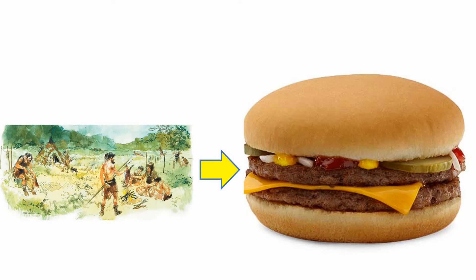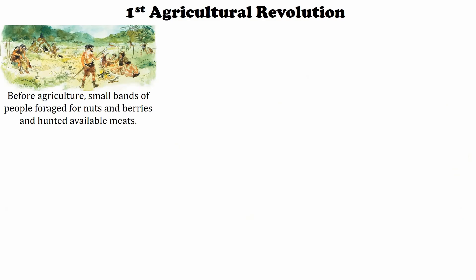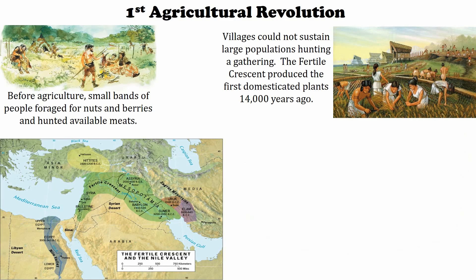It started a long time ago when nomadic bands of people were hunting and gathering, wandering around, couldn't sustain a large population. They start wanting to come together and build some urban agglomeration. So in the Fertile Crescent, which is in Mesopotamia between the Tigris and Euphrates Rivers in the Middle East, people start realizing that if they could cultivate seeds, they could become more sedentary.